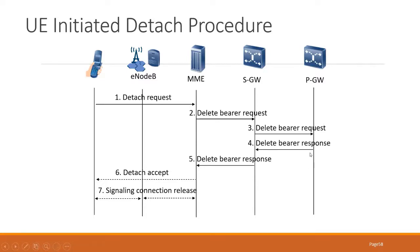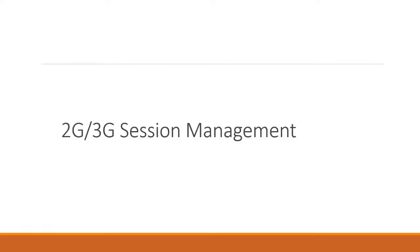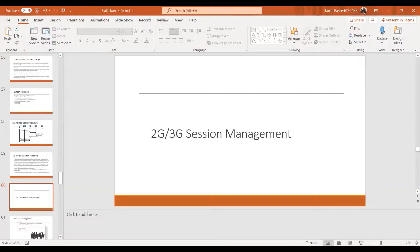The SGW sends a delete bearer request to the PGW. The PGW will delete any bearer and session information it maintains, and responds back. The SGW will then remove any session information it has and respond back. The MME, based on this, will remove any session information it has saved and send a detach accept message. Finally, the signaling between the UE and the MME will be released in order to ensure resources are freed for other users.